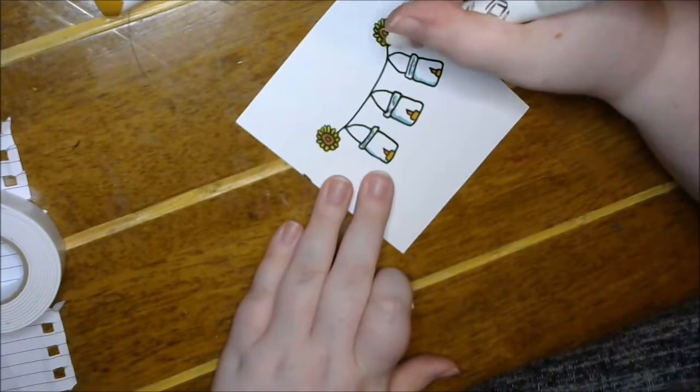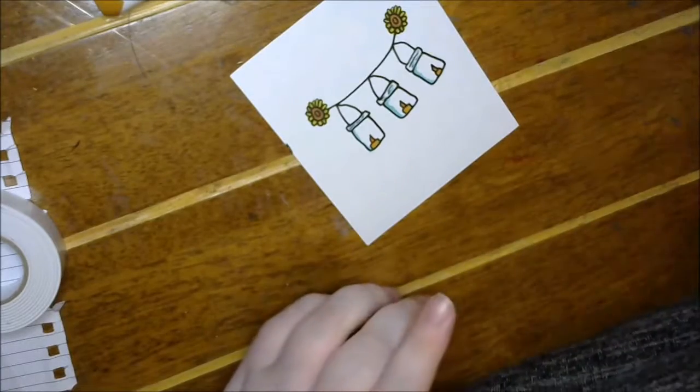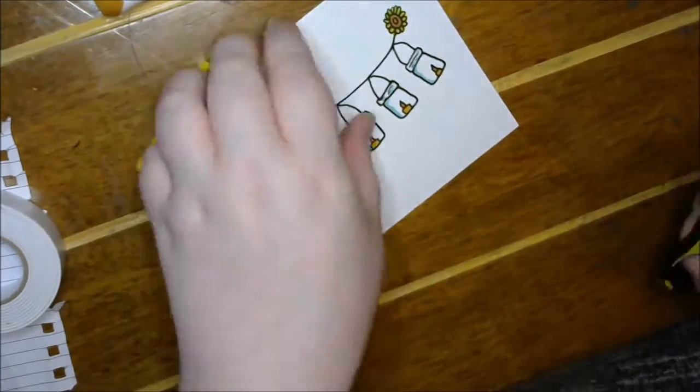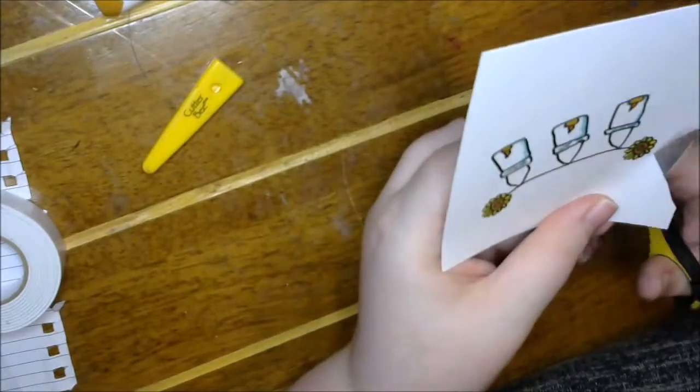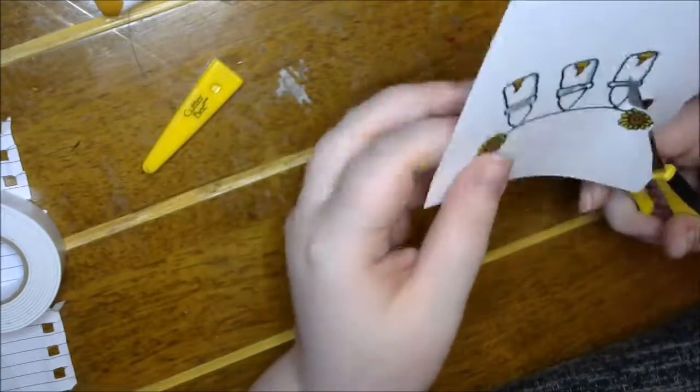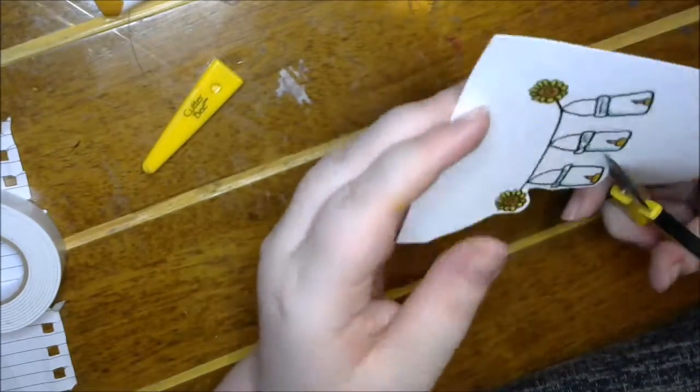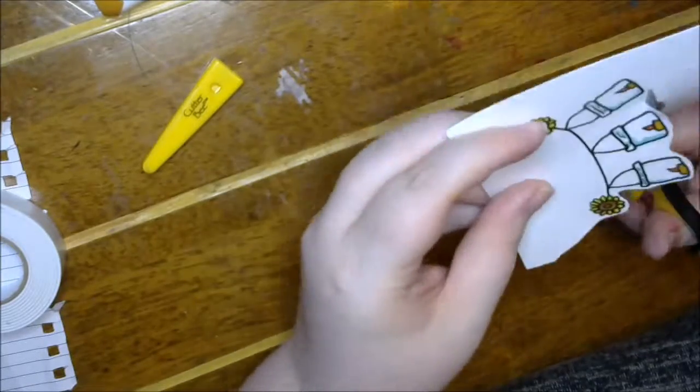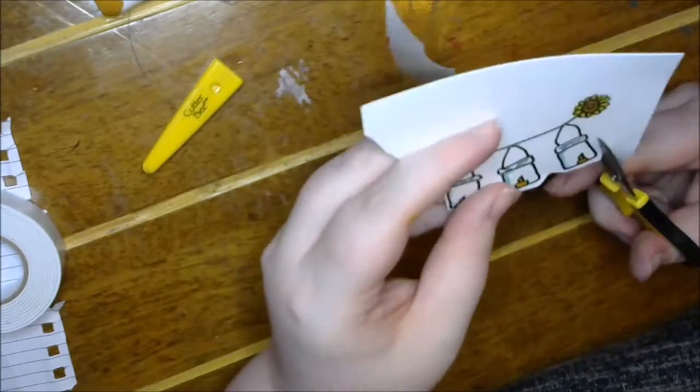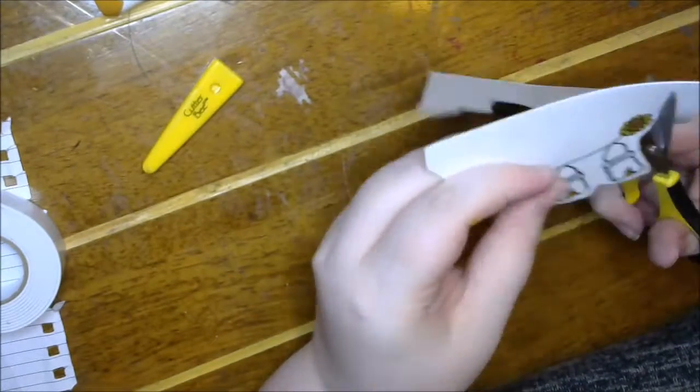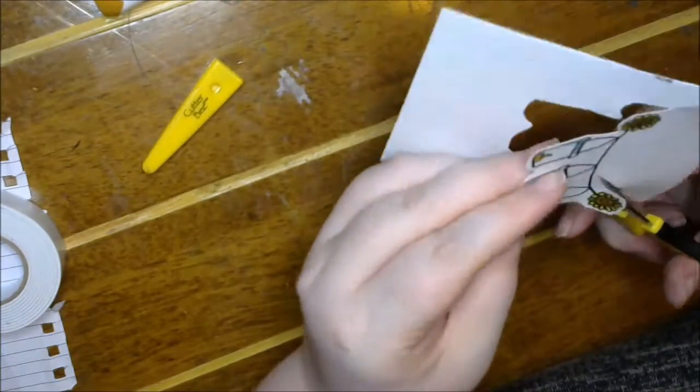And then I didn't fully fussy cut it. I just kind of did a ring around it. I didn't really want to have it to be too fragile because I wanted to hide the staples underneath this image rather than put a piece of ribbon or an extra panel of cardstock.